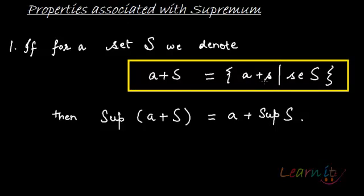That set will be A plus S, where s belongs to the set S. Then, the supremum of this set will be nothing else but the supremum of S plus the length A added to it. A plus S is a translation of the set S to the right, with a length of A added to each and every element of S.